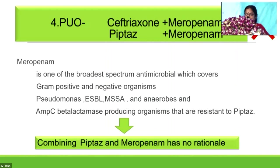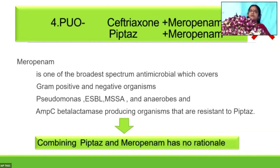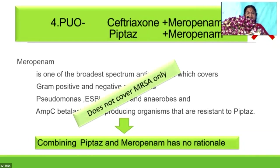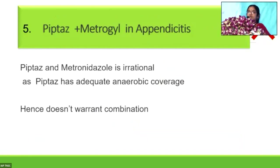Adding meropenem to ceftriaxone in PUO is irrational because meropenem is one of the broadest-spectrum antimicrobials — it covers everything: gram-positive, gram-negative, pseudomonas, ESBL, MSSA, anaerobes, and AmpC beta-lactamase-producing organisms resistant to pip-taz. Meropenem covers everything ceftriaxone and pip-taz cover, so there is no point adding both. What meropenem doesn't cover is MRSA — so if you want to add something to meropenem, it has to be vancomycin only. Similarly, pip-taz completely covers anaerobic organisms, so there is no need to add metronidazole to pip-taz in appendicitis.